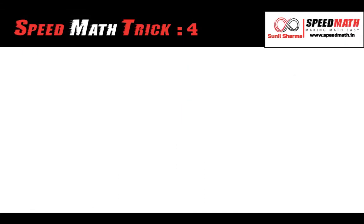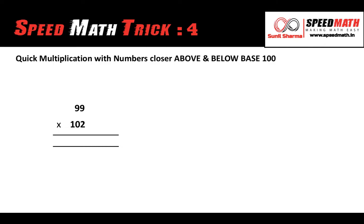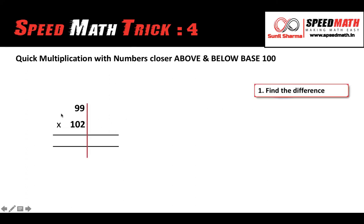In this trick, students, we are going to learn how to multiply a number which is less than the base and a number which is above the base. For example, if you have to multiply 99 into 102, observe the base for both numbers is 100 because 99 and 102 are both close to 100. One number, 99, is less than the base and the other, 102, is above the base. If the number is less than the base we take a negative sign, and if the number is more than the base we take a positive sign.